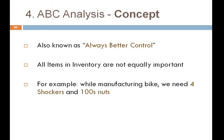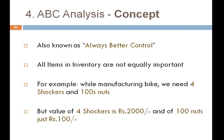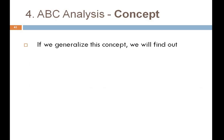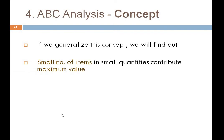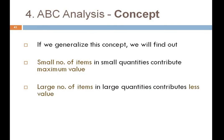For example, while manufacturing a bike we need four shockers and 100 nuts and bolts. The value of four shockers is 2,000 rupees — each shocker contributes 500 rupees. The value of 100 nuts and bolts is just 100 rupees. So one shocker equals 500 rupees, giving 2,000 rupees in total for four shockers. This shows that a small number of items in small quantities can contribute to the maximum value.